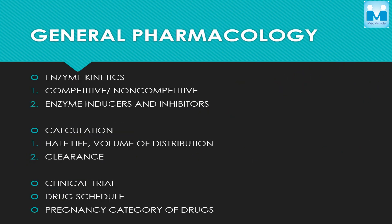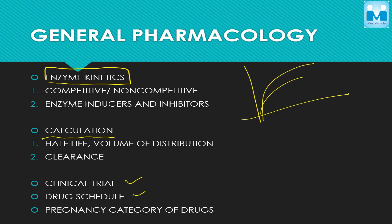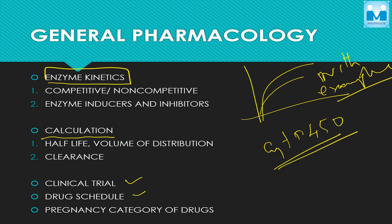Now coming to general pharmacology, the important topics are enzyme kinetics — there are some calculations and topics like clinical trials and drug schedules. In enzyme kinetics, there are a lot of charts: competitive inhibition, non-competitive inhibition, effects of inducers and inhibitors, so you have to be thorough with examples. Then there is the cytochrome P450 system, and you have to know the inducers and inhibitors of this enzyme.